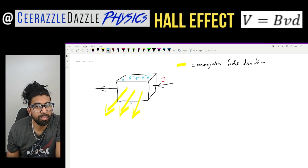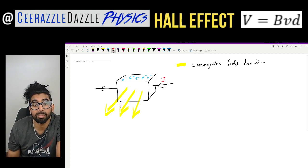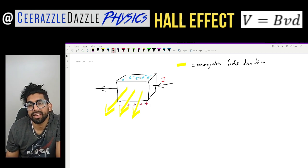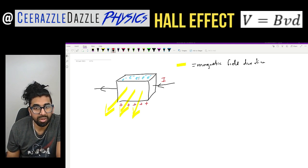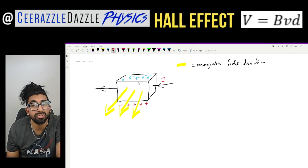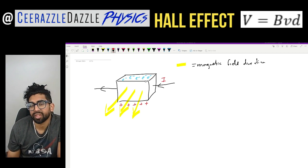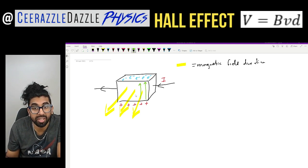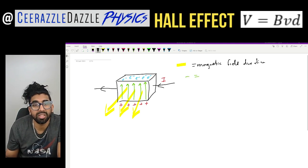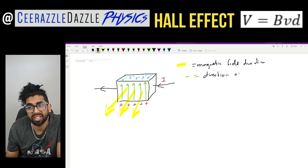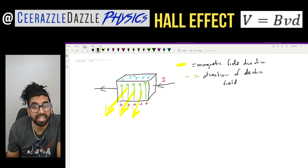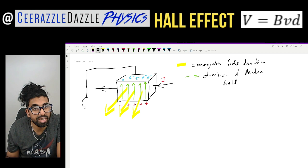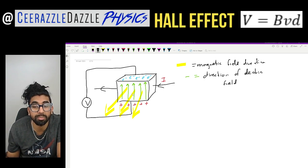The bottom plate, because it has lost all that negative charge, will have a deficiency and therefore become positively charged. So now we have a potential difference across the top and the bottom plate. If there's a potential difference, what will happen is there's now going to be an electric field between the top and the bottom plate — shown here in green, with arrows indicating the electric field direction going upwards. We can label that potential difference V — the voltage across the top and bottom plate.